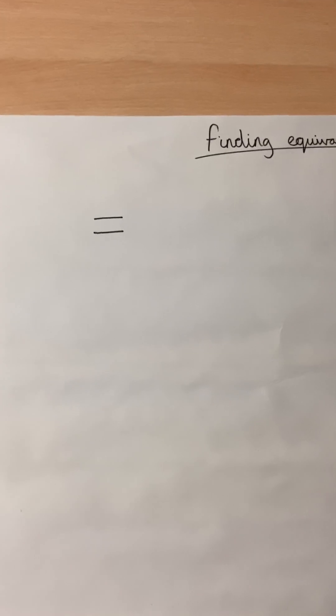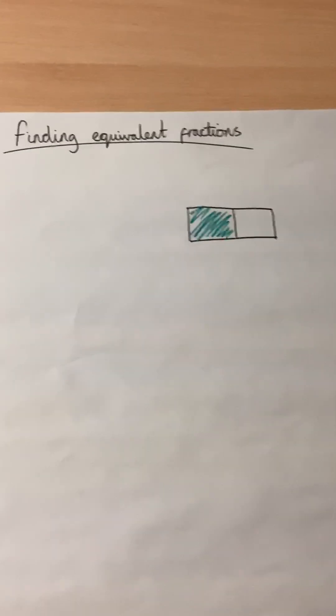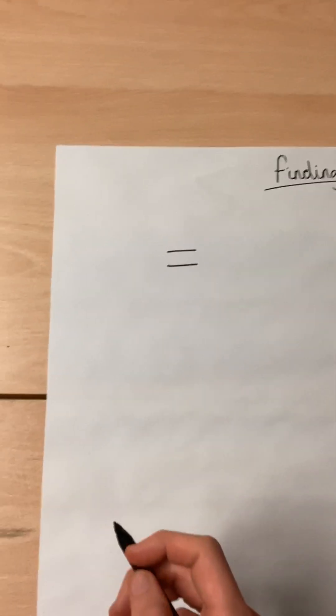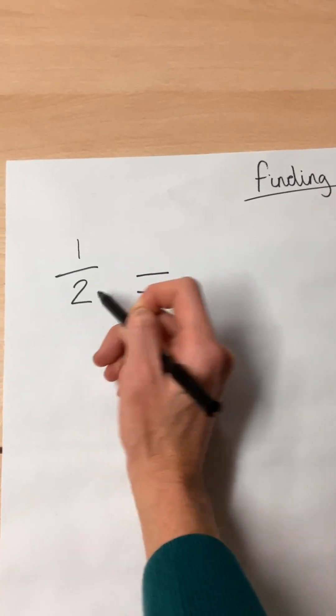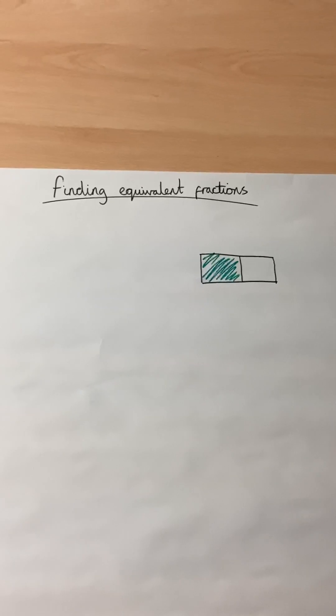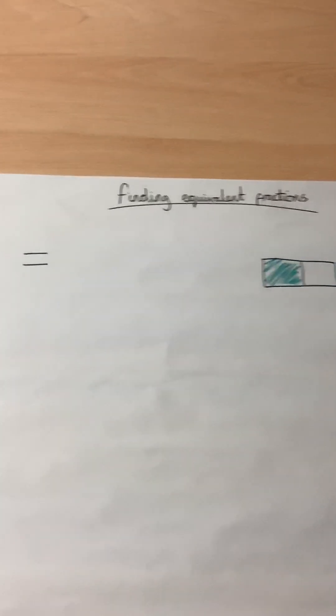Equivalent means equal. For example, the fraction I have here is a half. Again, you have to apologise for my drawing. It is not accurate, but just a basic representation. I have coloured in one half.